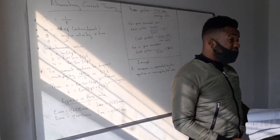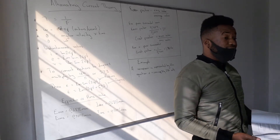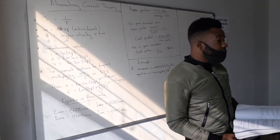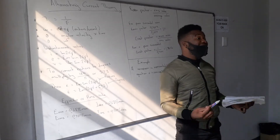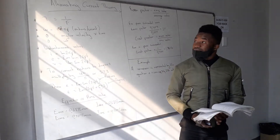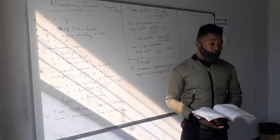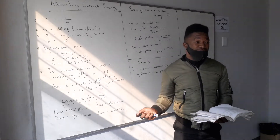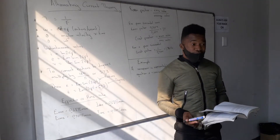So in Chapter 6, when they're talking about alternating current theory, it means the current moves in both directions. We'll be dealing with a current which can change direction. There are certain formulas that go with alternating current theory that you must know — some are given on the formula sheet, and some are not.